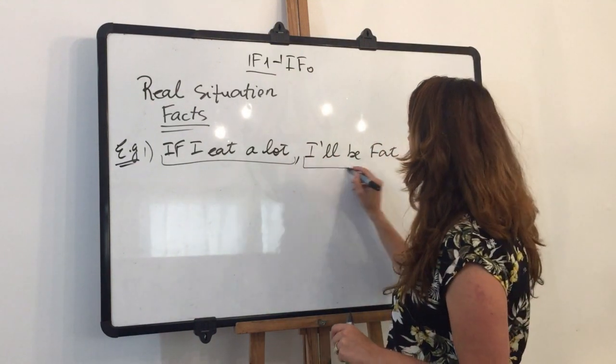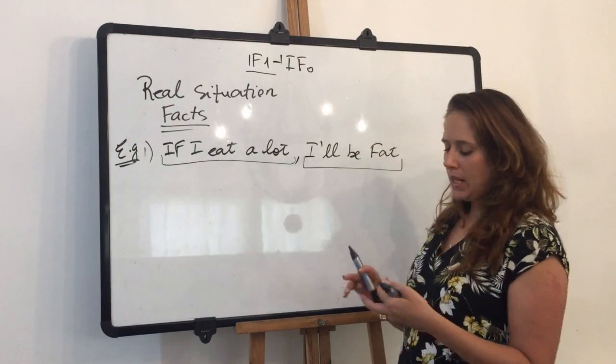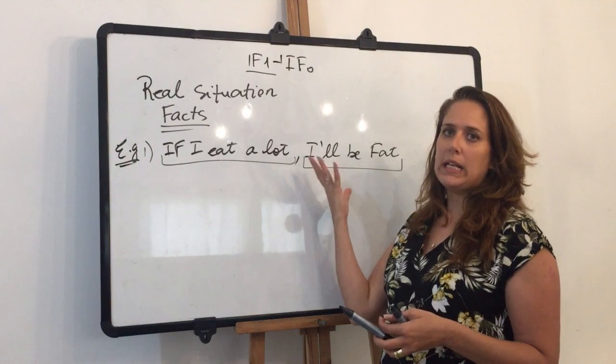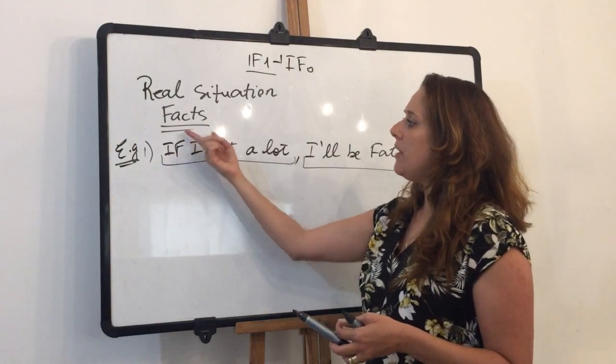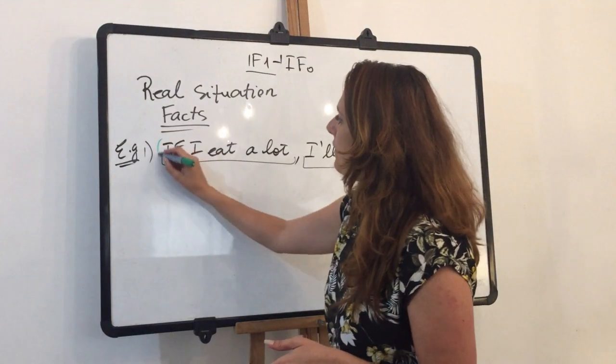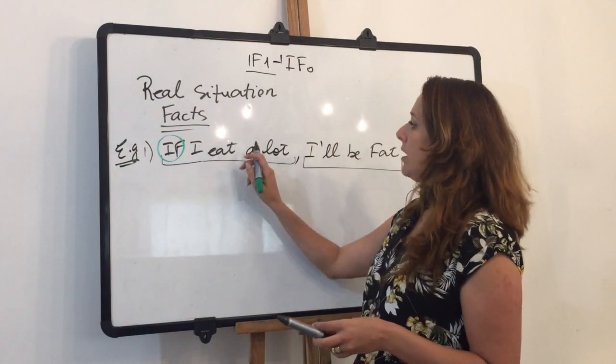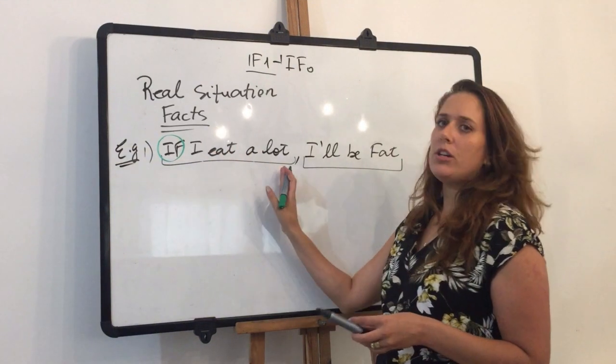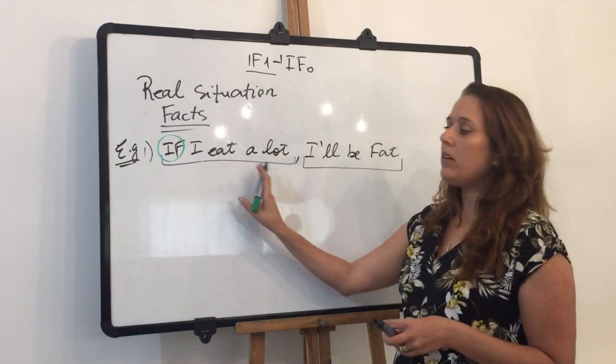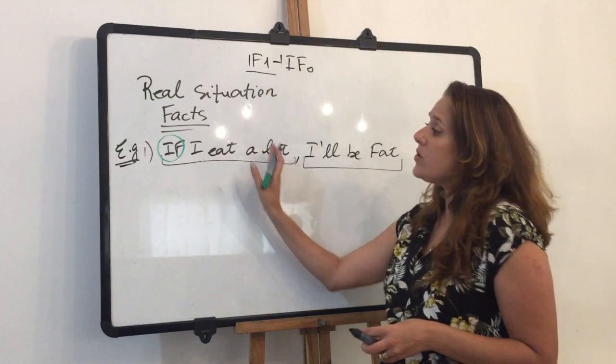Grammatically speaking, I have the if word, the conditional word. I have a subject: I eat a lot. This is a regular present simple sentence. I only add the if word, so I have 'I eat' in present simple.